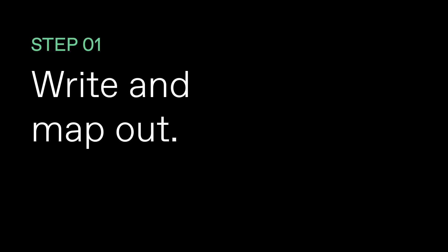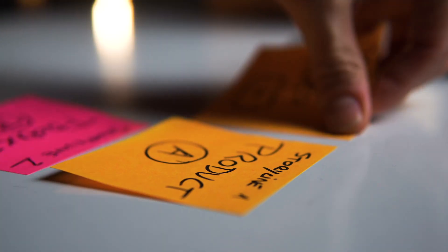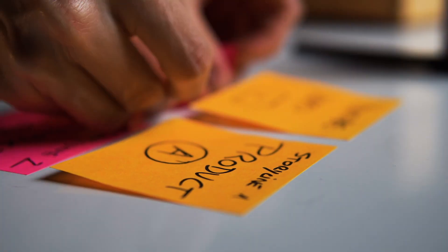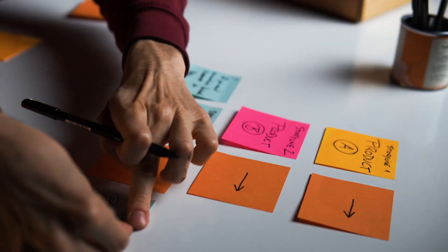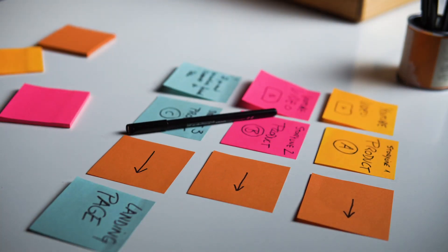Let's get started. The first thing you need to do is write your script and map out your storylines. This might sound very obvious, and let's be honest, it is, but it's very important that you actually have a clear idea of what you want to do and what piece of video leads to what. The best way to do that is actually getting some post-its, putting them on the table, and making your map of how this interactive content would look like in each of the storylines.